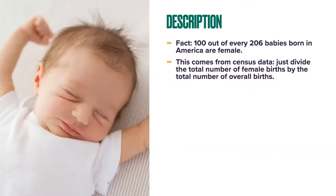Let's start with description. Here's a basic fact from census data: 100 out of every 206 babies born in America are female. There's no obvious biological reason why it wouldn't be exactly a 50-50 ratio at birth, but it's true. And we know that by counting — by looking at census data on the millions of births every year and counting female births relative to total births. That's a simple example of description in data science.